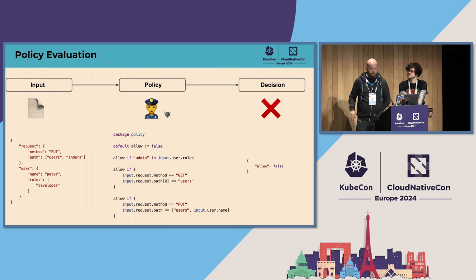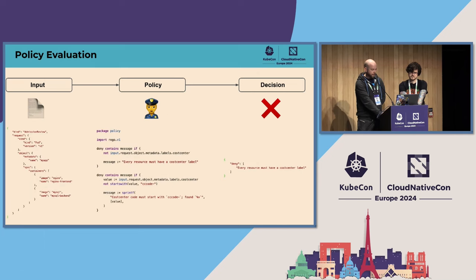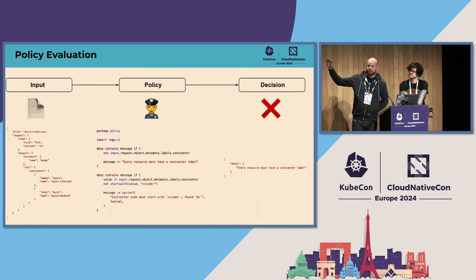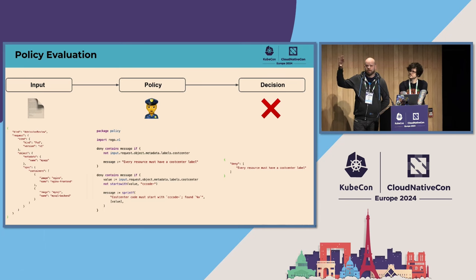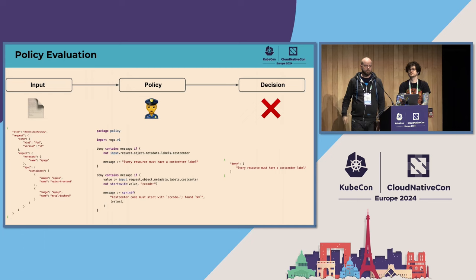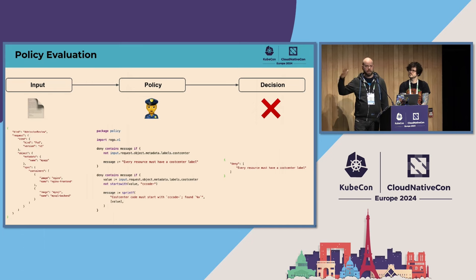That's a crash course in Rego and policy evaluation. In this other case we have a Kubernetes admission review object, but to OPA this is just JSON — none of these things actually mean anything, it's just a bunch of structured attributes. We can make policy decisions on anything: a Terraform plan or whatever you have.